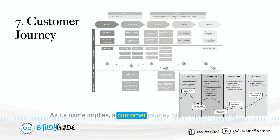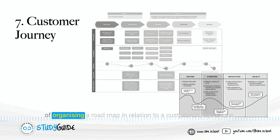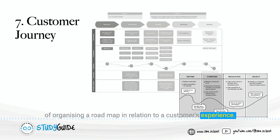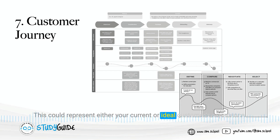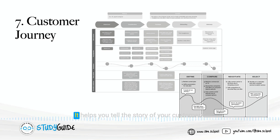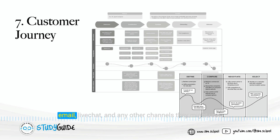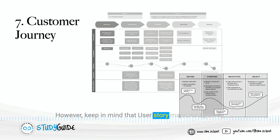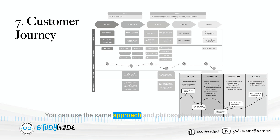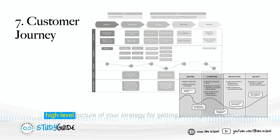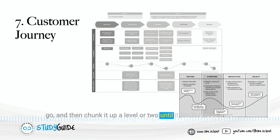As its name implies, a customer journey roadmap is a method of organizing a roadmap in relation to a customer's experience. This could represent either your current or ideal customer's experience. A customer journey map is a visual picture of the customer or user journey. It helps you tell the story of your customer's experiences with your brand across social media, email, live chat, and any other channels they might use. However, keep in mind that user story maps are typically lower level and are better suited for backlog management. You can use the same approach and philosophy to sketch out a high-level picture of your strategy for getting where you want to go, and then chunk it up a level or two until it fits in a roadmap.